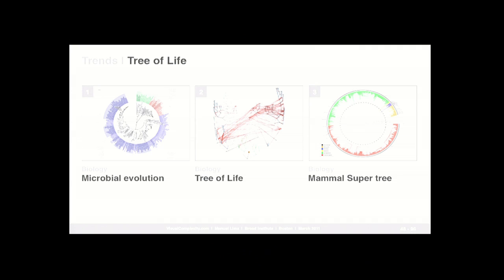The last trend is the tree of life. As a huge fan of Darwin, I find it interesting that the only illustration in the Origin of Species was what he called the tree of life. A lot of effort has been going on in trying to map the inherent complexities of our tree of life — mapping all species on the planet. These are just some examples of a really ongoing trend in visual complexity.